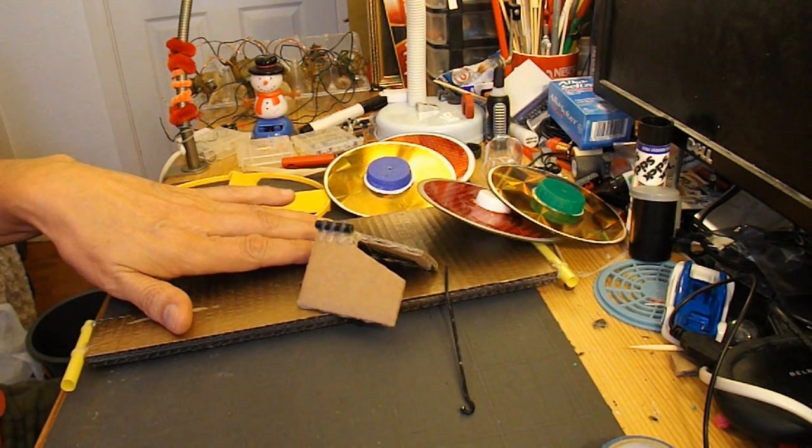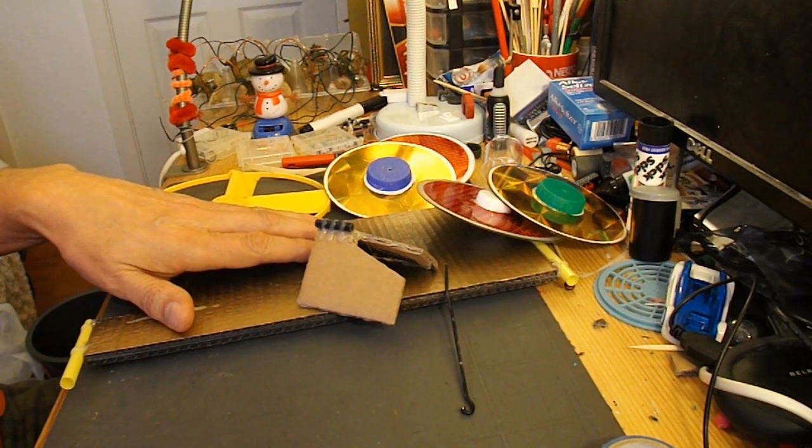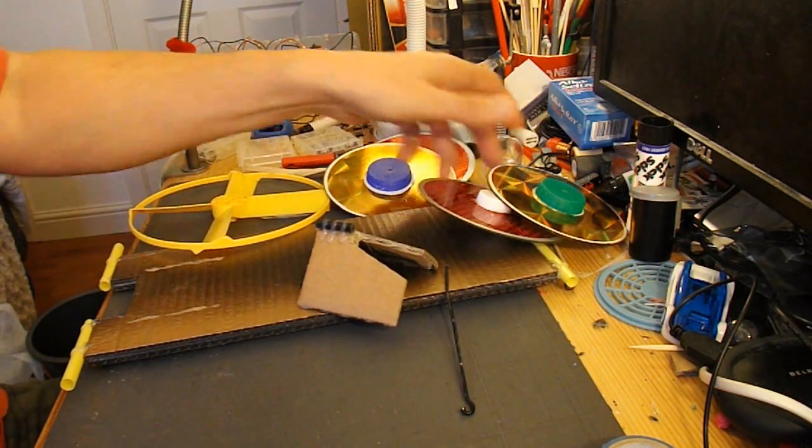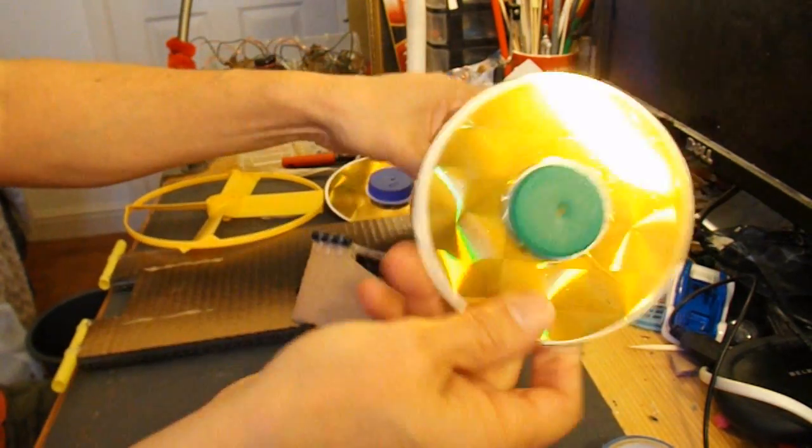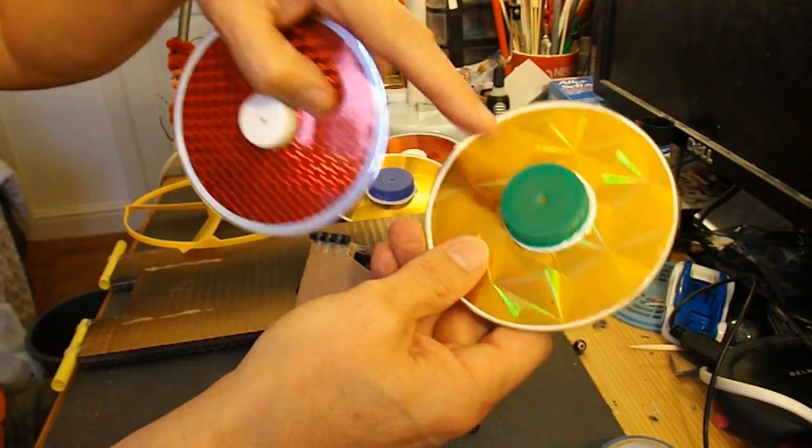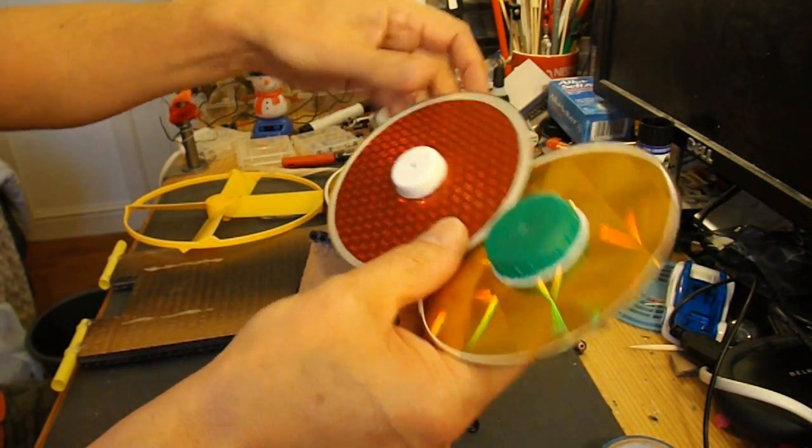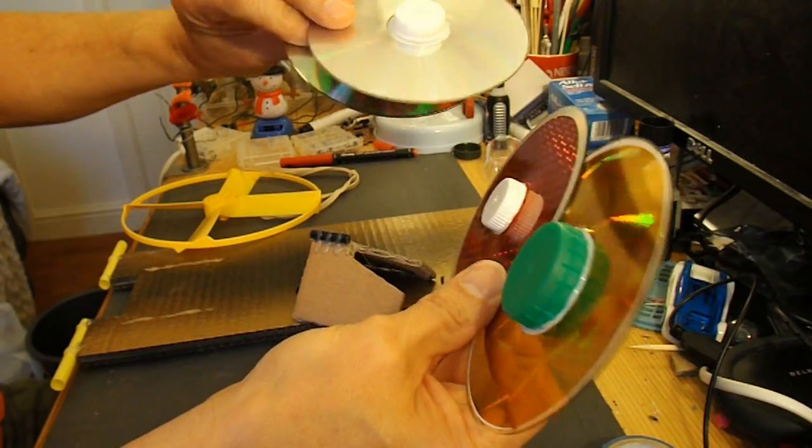I'll use all parts from some of my previous cars to save some time. So I've got the CDs already with the bottle tops as the hubs, so those will do for the wheels.